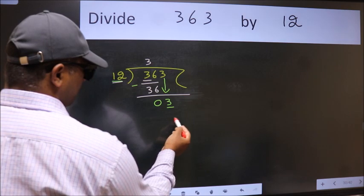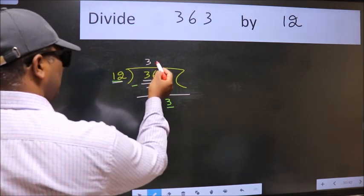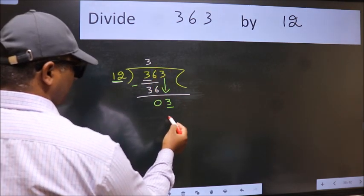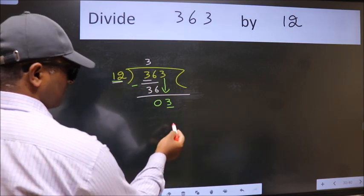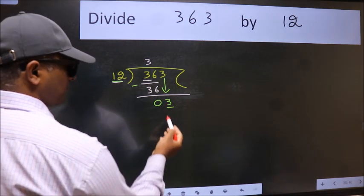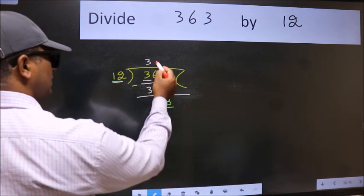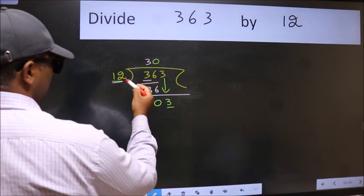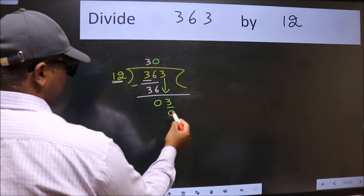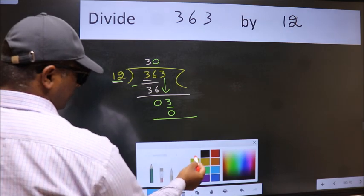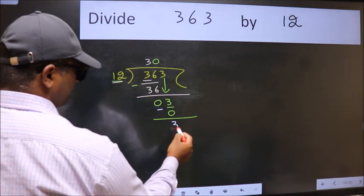what we should think of doing is, which number should we take here? If I take 1, we will get 12. But 12 is larger than 3. So what we do is, we take 0 here. So 12 into 0 is 0. Now we subtract. We get 3.